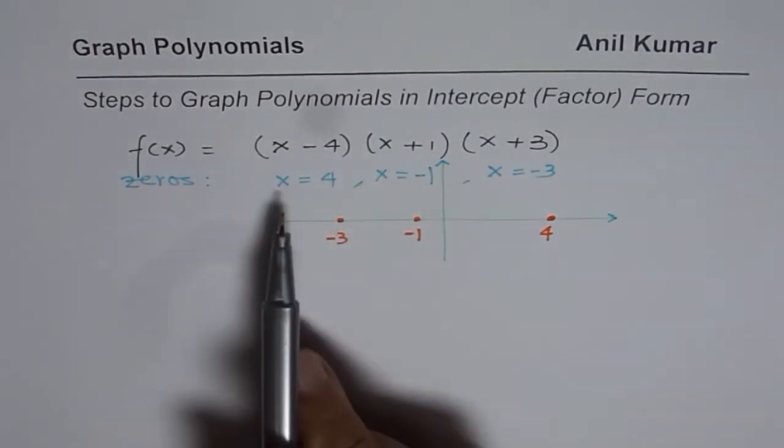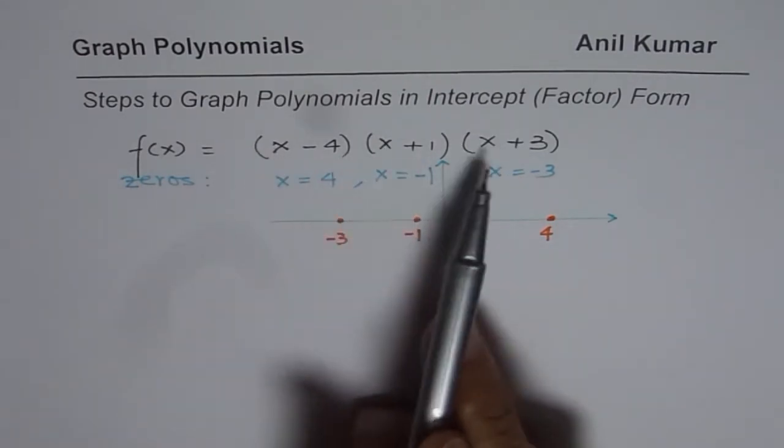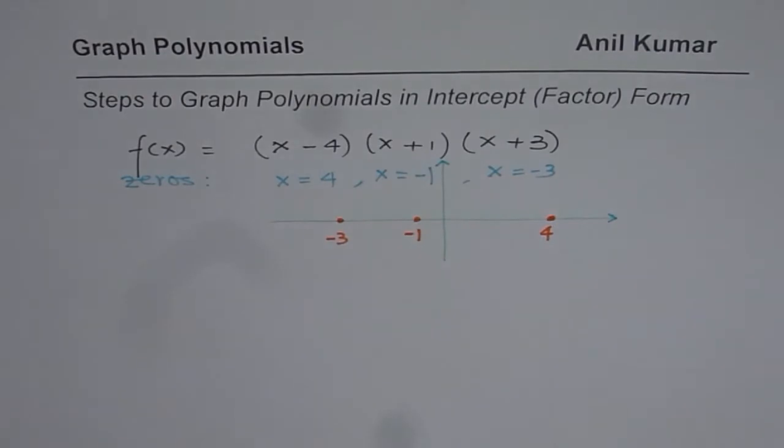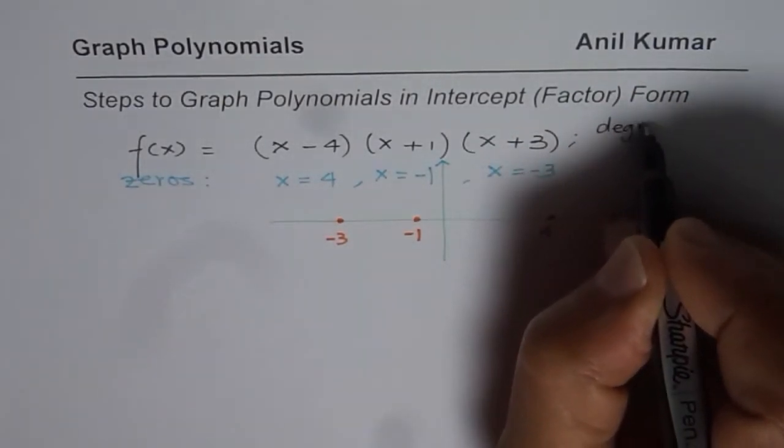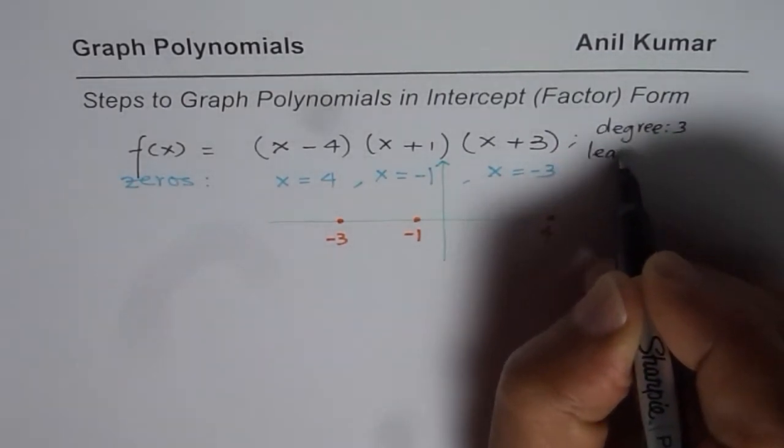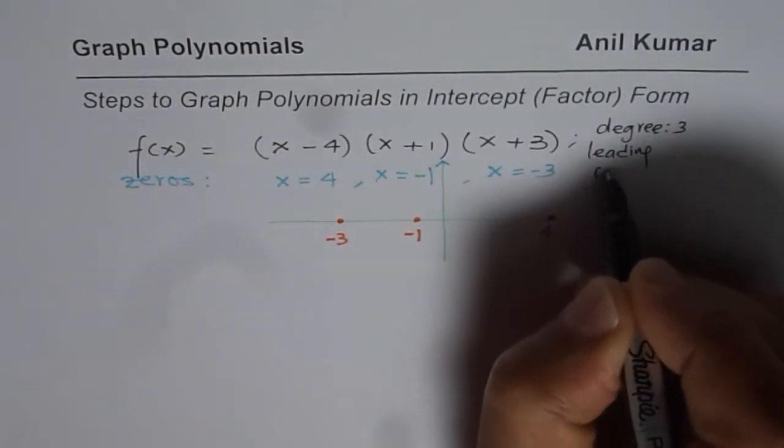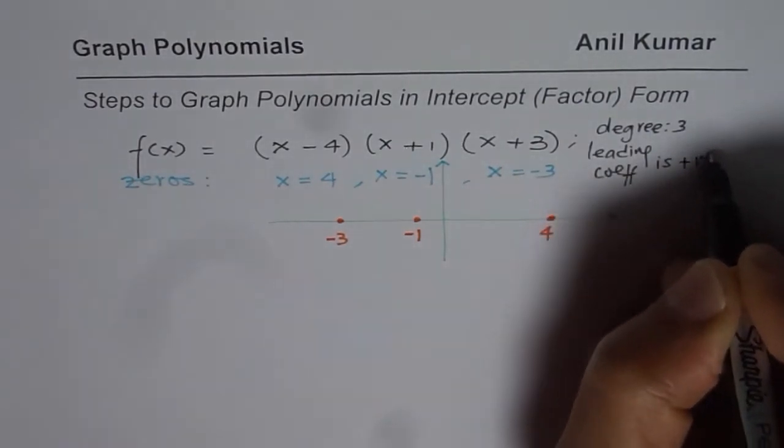Now since this is a cubic function with positive leading coefficient, if I multiply these x's, we get positive leading coefficient. Let me write that down here. So what we have here is degree 3. So we have two things known to us. Degree is 3 and leading coefficient is positive.